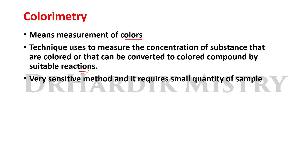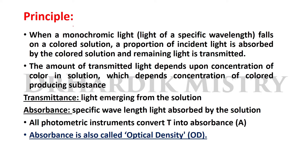Colorimetry is a very sensitive method and requires only a small quantity of sample. The principle of colorimetry: when monochromatic light — a light of specific wavelength — falls on a colored solution, a proportion of the incident light is absorbed by the colored solution and the remaining light is transmitted.